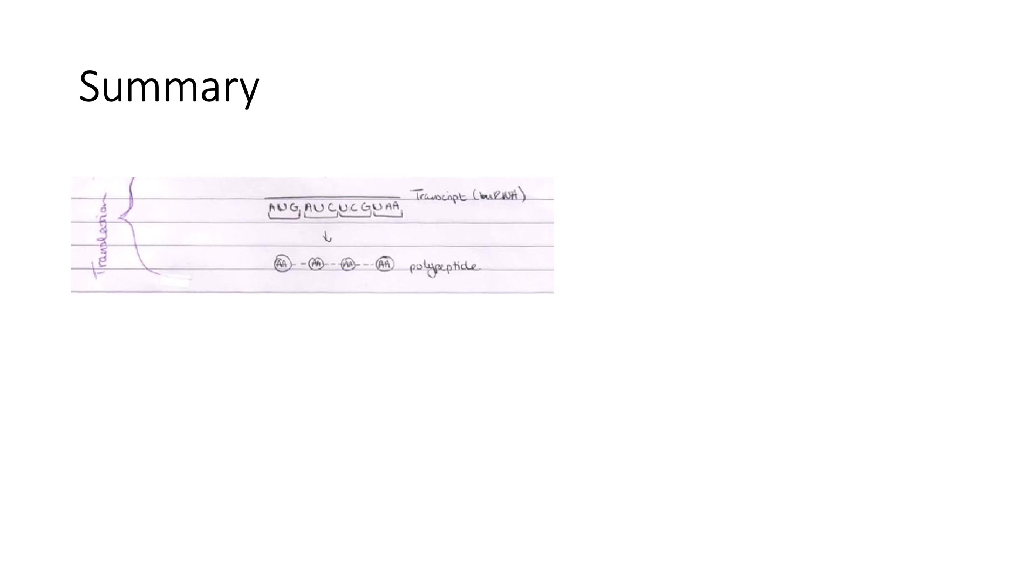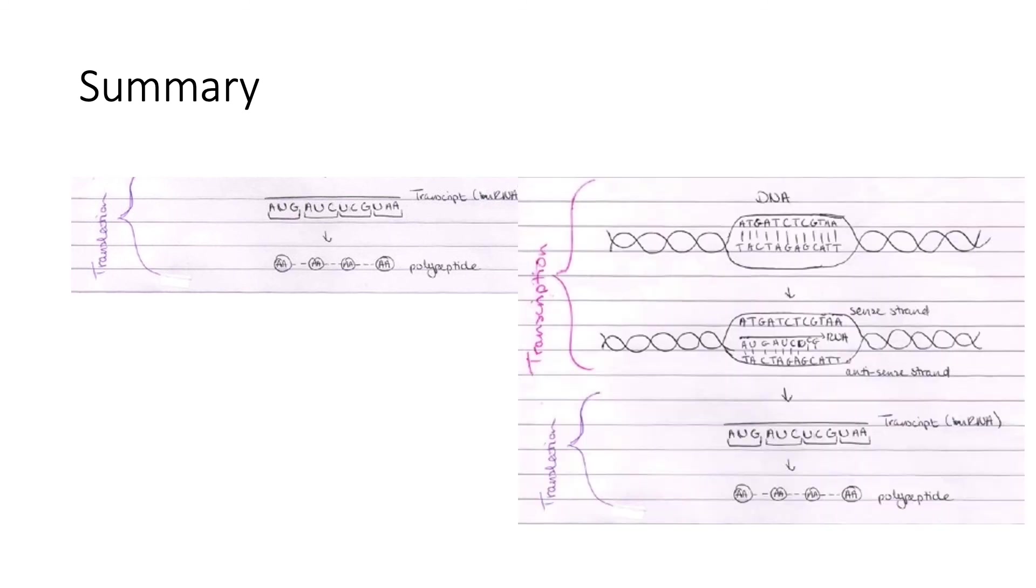If we combine the two summary diagrams together, you can see how a DNA molecule is turned into an mRNA strand, which is then translated into a polypeptide chain. That's all for today, good luck and thank you for watching.